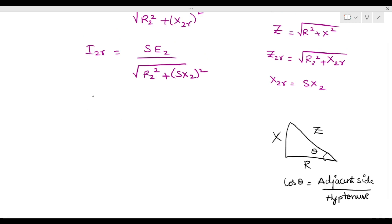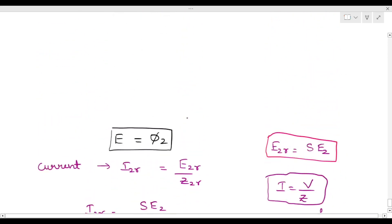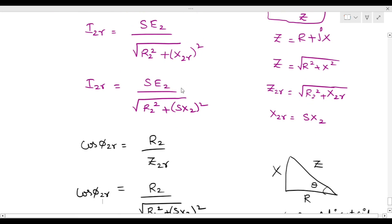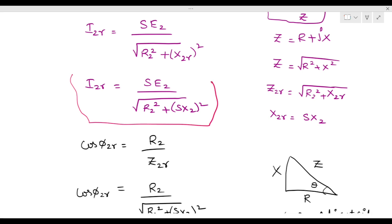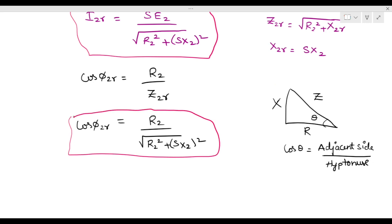So cosφ₂r equals R₂ divided by Z₂r, which is R₂ divided by square root of (R₂² plus (sX₂)²) whole square. So cosφ₂r equals R₂ by square root of R₂² plus (sX₂)² whole square. Now substituting i₂r and cosφ₂r into the fundamental torque equation.